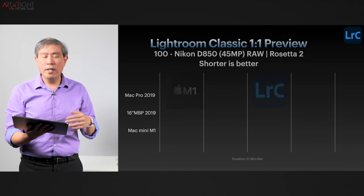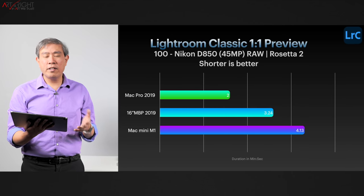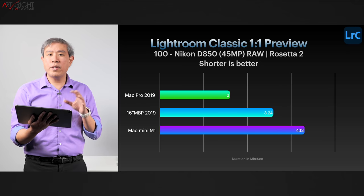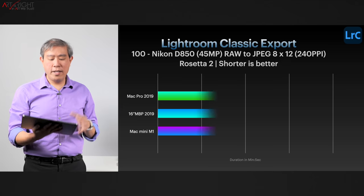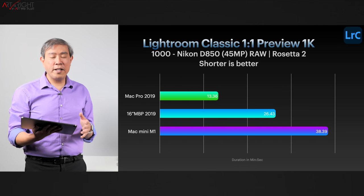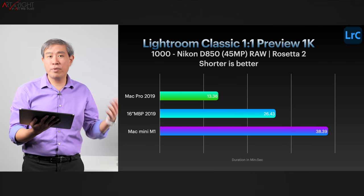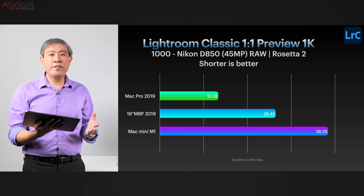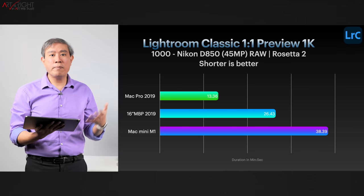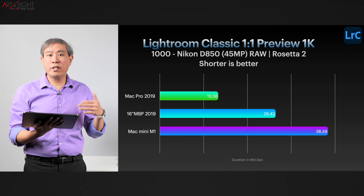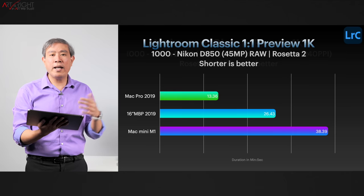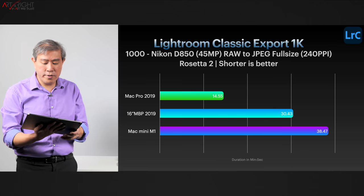Let's talk about Lightroom Classic first. I've done a lot of testing here — previous tests include the one-to-one preview, the Lightroom Classic export, and the one-to-one preview for 1,000 files. As I mentioned in my previous video, with 1,000 files we start to see anomalies where halfway through, the Mac Mini's performance dropped by about 20%, and it took much longer to finish, so it doesn't scale up quite well yet.